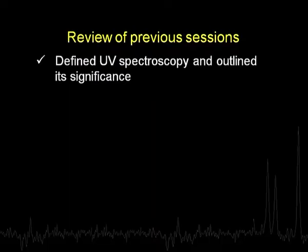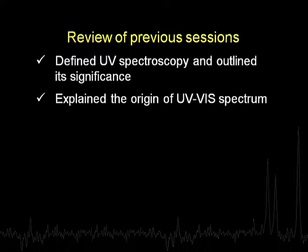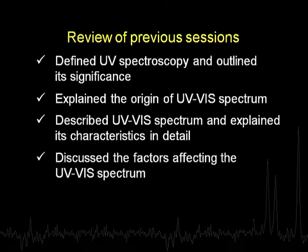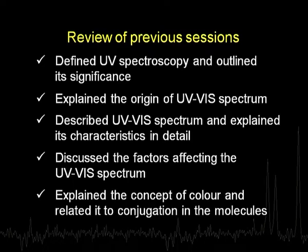Let us begin by reviewing what we did in the previous sessions. We defined spectroscopy and outlined its significance, then explained the origin of UV visible spectrum. We moved on to describing the UV visible spectrum and explained its characteristics in detail, talking about position, intensity, width and so on. We discussed the factors which affect UV visible spectrum in detail, seeing how different factors affect the energy level diagram or the energies of the molecular orbitals involved in the transitions. We also explained the concept of colour and related it to the concept of conjugation in molecules.